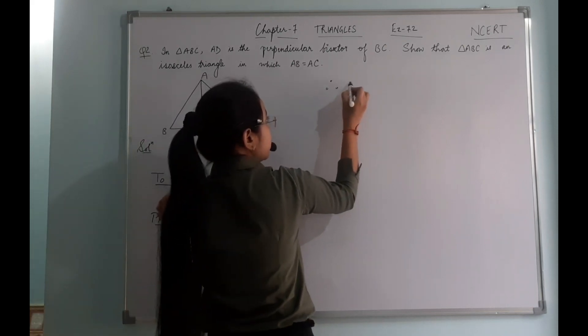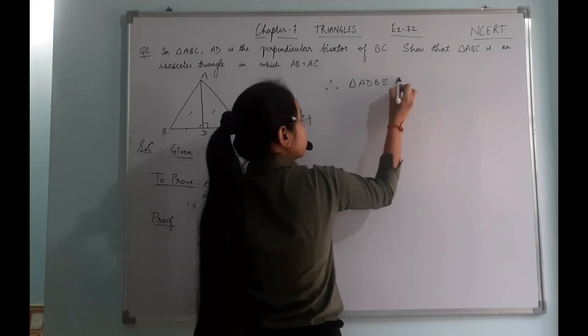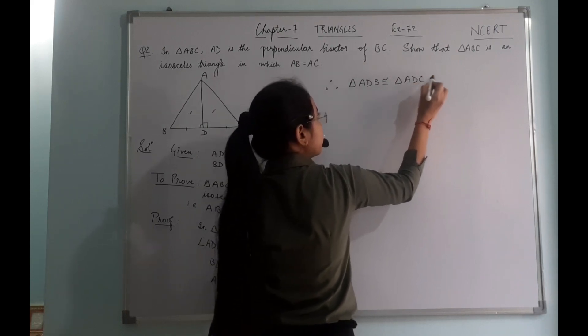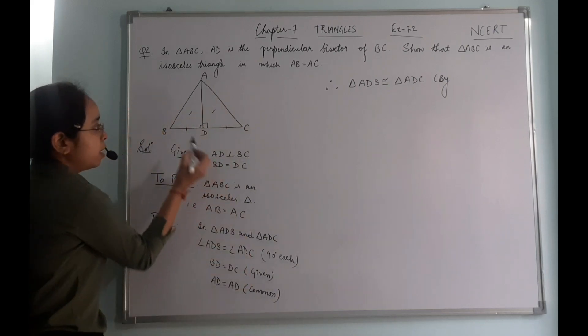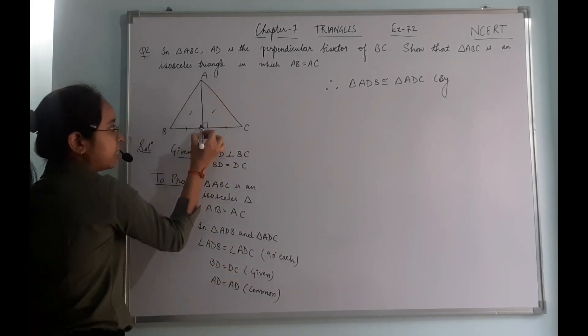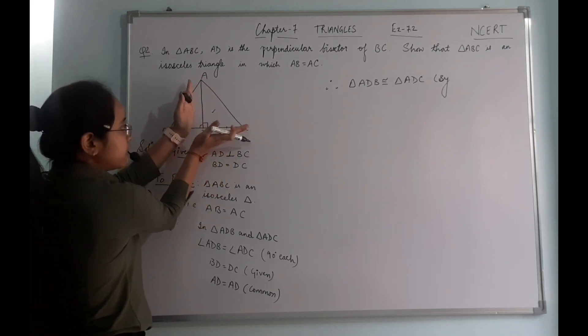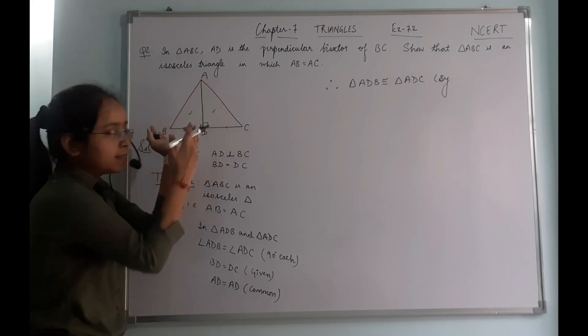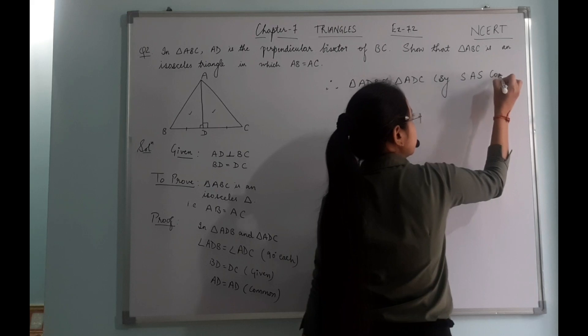Therefore, triangle ADB is congruent to triangle ADC. So by which rule? We are using side, then this angle, then side. Similarly for this triangle: side, angle, and side. So our angle is included between the two sides. So by SAS congruence rule.